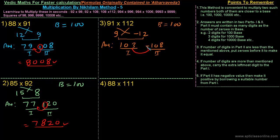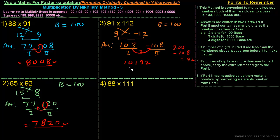The base is 100, so the value of part 1 is 100 times part 2. Borrowing 1 gives 200 minus 108, which is still not enough. We borrow 2: part 1 becomes 103 minus 2 equals 101, and part 2 becomes 200 minus 108 equals 92. Part 2 already contains two digits, so the final answer is 10192.